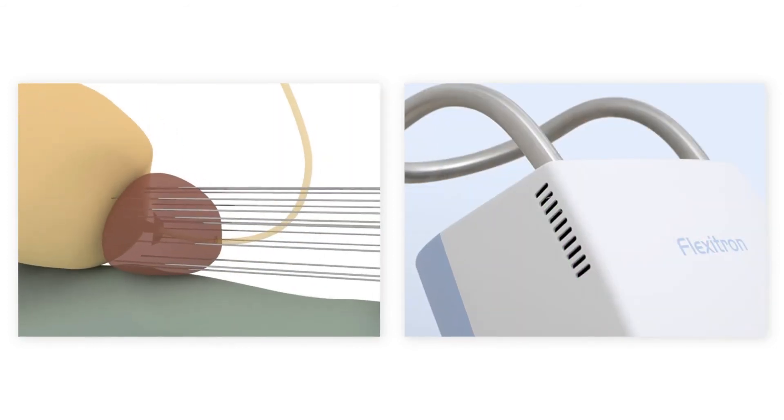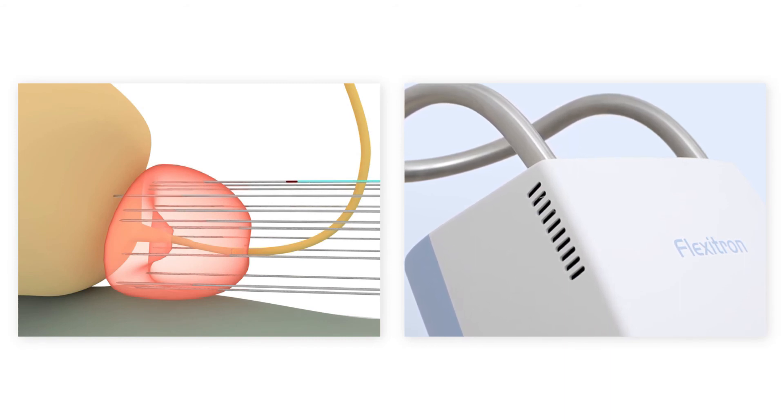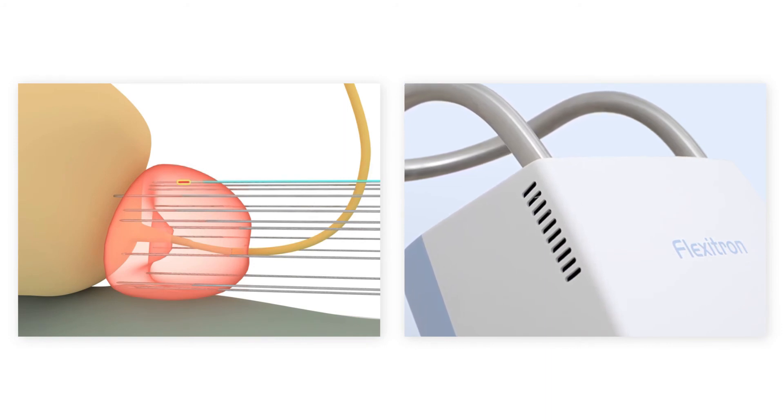For delivery of HDR prostate brachytherapy, the needles are connected to the afterloader. This device transports a radioactive source into the needles to the planned dwell locations and radiates the target area.